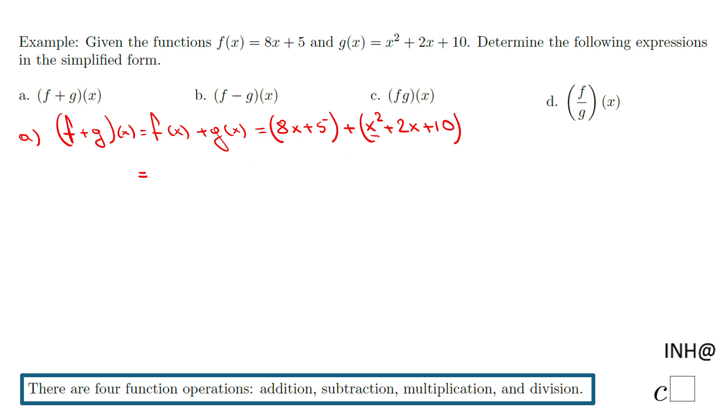So what is the result? We notice we have only x squared here, but then we have 8x plus 2x that will be 10x, and then we have the last part which is 5 plus 10 that will be 15. So it's combining like terms, exactly like this. You add the two functions by combining like terms. This is part a.